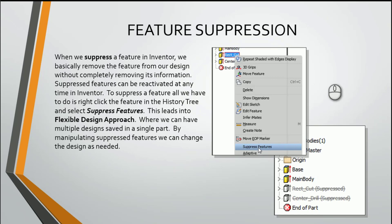The suppress feature command can be accessed just by right-clicking on any feature inside of our history tree, and we have the option to suppress them. Suppressing them kind of acts like deleting them in a sense, but we still retain all the information for that particular part. So even though I might delete a rectangular cut, that rectangular cut information is still going to be there when I suppress it. This gives us a flexible design approach where if we have a model that is very similar, we can maintain these different features for slight changes in its design.